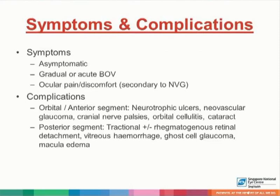Orbital or anterior segment complications include neurotrophic ulcers, neovascular glaucoma, cranial nerve palsies, orbital cellulitis, and cataract. Posterior segment includes tractional with or without rhegmatogenous retinal detachment, vitreous hemorrhage, ghost cell glaucoma, as well as macular edema.